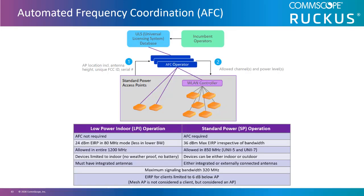The FCC's 6 GHz R&O and FNPRM, adopted on April 23rd, 2020, defines two categories of devices: standard power access points and low-power indoor access points. The R&O describes an automatic frequency coordination mechanism that would identify which frequencies are available to unlicensed devices without causing harmful interference to fixed point-to-point microwave receivers.